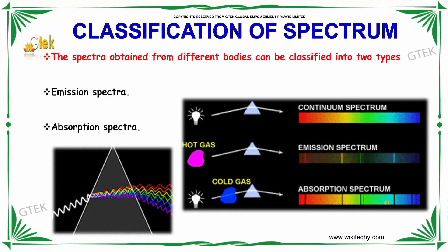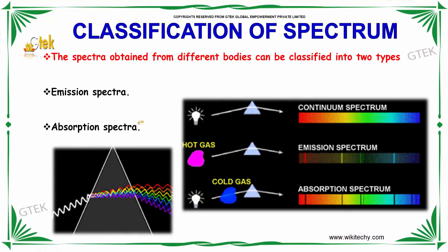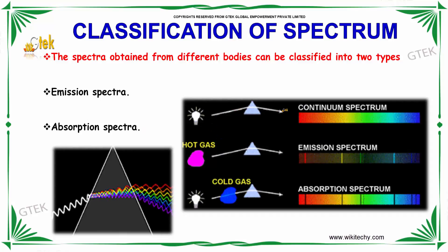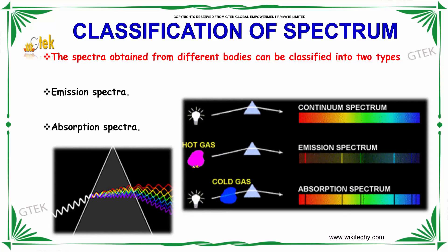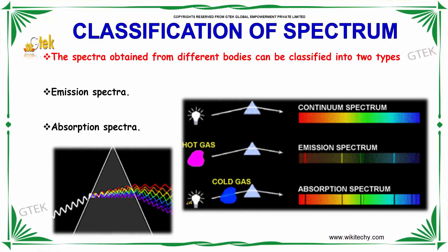If we talk about the classification of spectrum, the first one is emission spectra and the other is absorption spectra. If light is passed through a prism, you will get a continuum spectrum. From the hot gas, you get emission spectrum. From the cold gas, you get absorption spectrum.